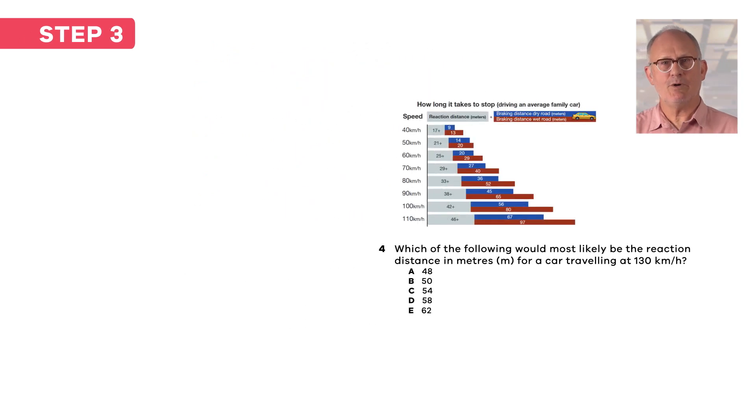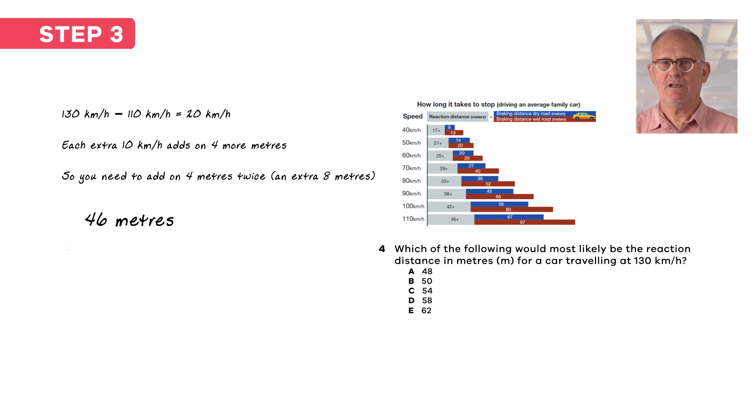Step three is now to do the maths. So start by working out how many kilometres per hour extra 130 is from the 110 kilometres per hour that is shown on the graph. So take 110 away from 130 gives you 20. So that's 20 kilometres per hour over the 110 kilometres per hour that is shown on the graph. And for each extra 10 kilometres per hour, the car travels an extra 4 metres. So as the car is travelling 20 kilometres per hour above the 110, you need to add on 4 metres twice. So that's an extra 8 metres. So starting with the reaction distance travelled at 110 kilometres per hour, which is 46 metres, now you need to add on the extra 8 metres, which makes it 54 metres.